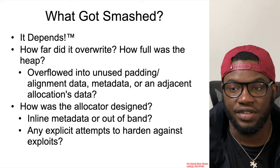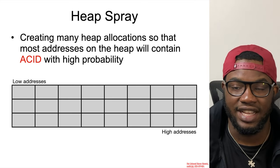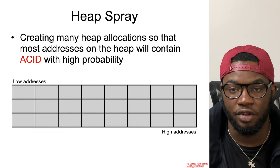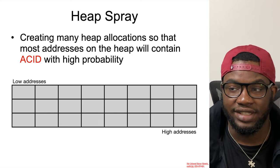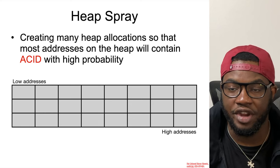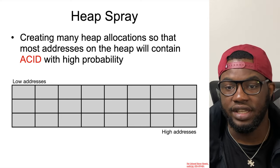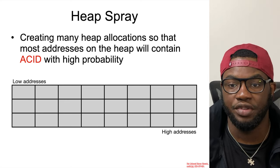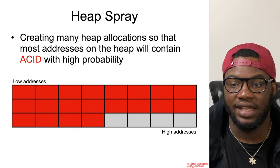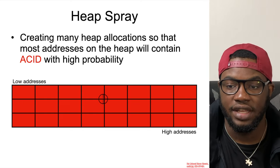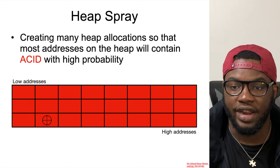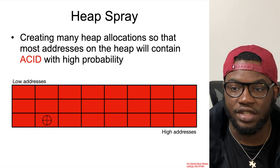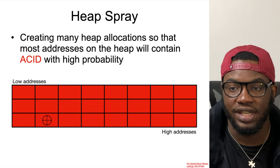It is with regards to this uncertainty that various techniques have been developed to give the attacker more reliability when exploiting heap buffer overflows. One such technique is the heap spray, which is a little older and was very common with 32-bit operating systems. Essentially, the attacker creates many heap allocations so that most addresses on the heap contain attacker-controlled input data, increasing the probability of hitting that data post-overflow. This became less common with 64-bit operating systems, so a new technique was developed.